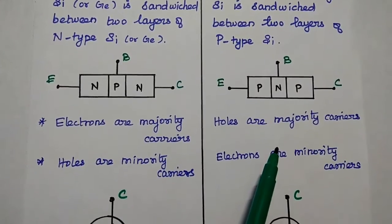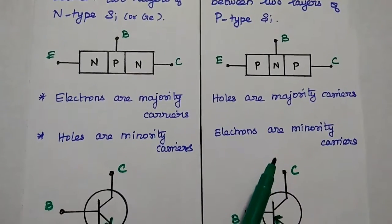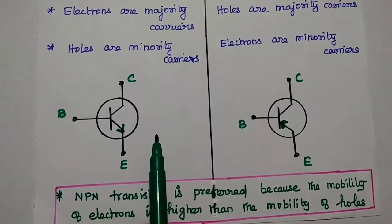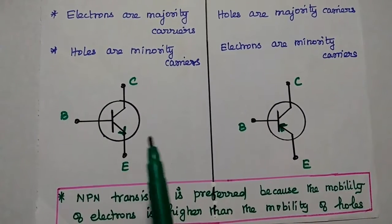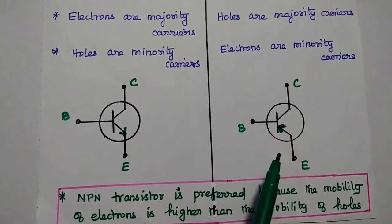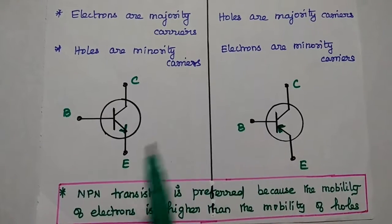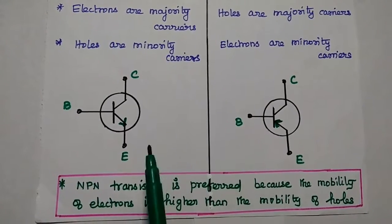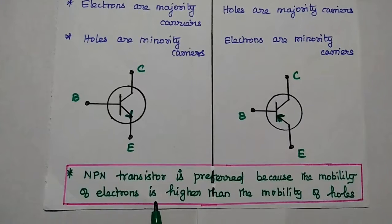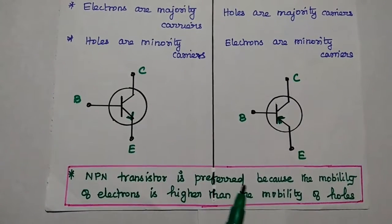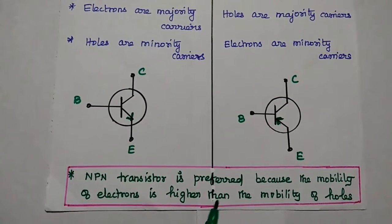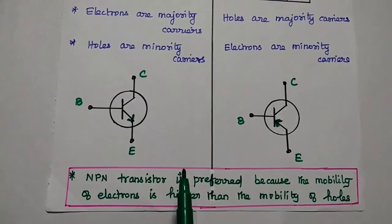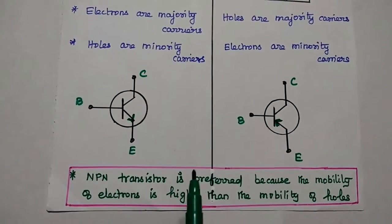In PNP, holes are the majority carriers and electrons are the minority carriers. A very important difference between NPN and PNP is the arrow mark on the emitter. In NPN, the arrow is towards the emitter terminal, but in PNP it is towards the junction. In real-time applications, NPN transistor is widely used than PNP. The reason is the mobility of electrons is higher than the mobility of holes. In NPN, the majority carriers are electrons, so we can have maximum mobility.